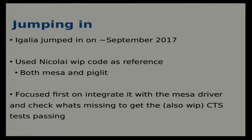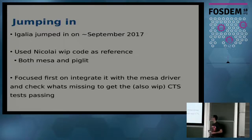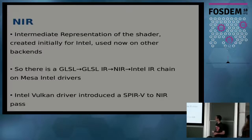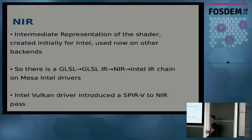He had code for Piglit — a test suite for OpenGL. Our first steps were integrating it with the Intel MESA driver and starting to use the CTS tests for this extension to evaluate what was missing. One of the things we found was that the code was in NIR. In compilers, when you parse a language you usually create an intermediate representation — NIR is one such representation. I'm not a compiler person, so apologies if I explain this improperly, but you parse the language and get an intermediate representation.